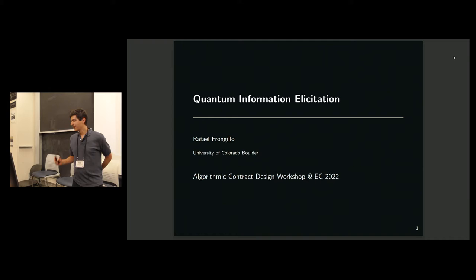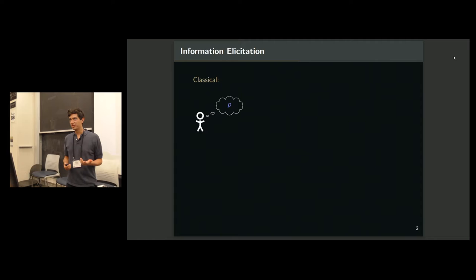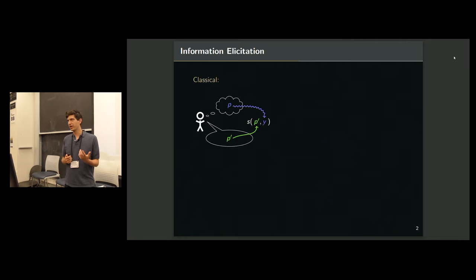So in the classical setting, I'll just describe information elicitation, which is basically what Yifan said. You have an agent with some private belief over a distribution over outcomes, and you ask them to tell you what their belief is, but they might tell you some P prime instead of P, and the goal is to design some contract, a scoring rule.